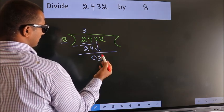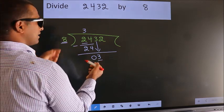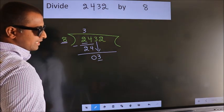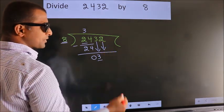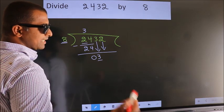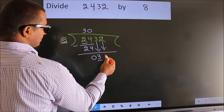Here we have 3. Here 8. 3 smaller than 8. So, we should bring down the second number. And the rule to bring down second number is put 0 here. Then only we can bring down this number.